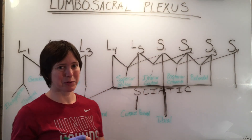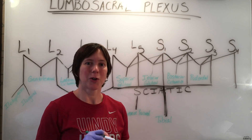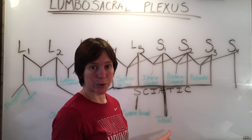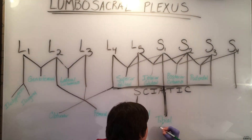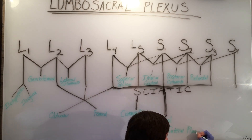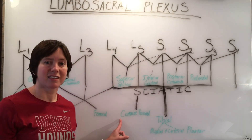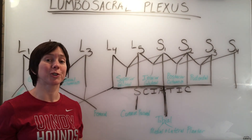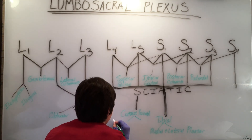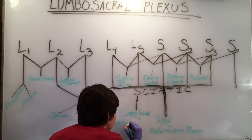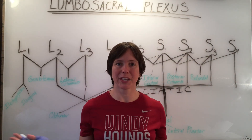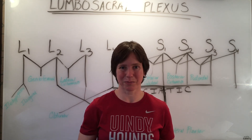Past the knee, the tibial nerve and the common peroneal nerve will divide into smaller branches. The tibial nerve will divide into medial and lateral plantar nerves. The common peroneal will divide into superficial and deep peroneal (or fibular) nerves.